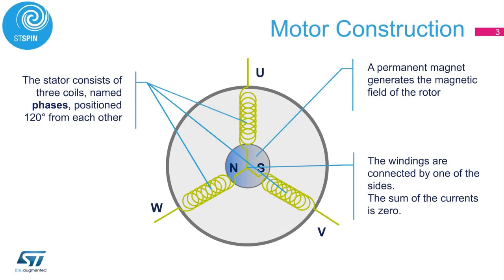Let's start with a quick overview of a three-phase brushless DC motor design and its working principles. The stator consists of three coils, 120 degrees apart. The windings or coils are connected together in a star configuration, and the sum of the current is zero. The rotation is obtained thanks to the attractive forces between two magnetic fields. One field is located on the rotor, which is the moving part. The second magnetic field is located on the stator, which is the body of the motor. A permanent magnet generates the magnetic field of the rotor, while the second magnetic field is generated through the electromagnet.